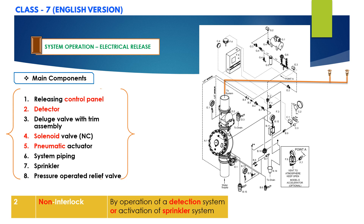When the deluge valve operates, the sensing end of the pressure-operated relief valve (PORV) is pressurized, causing the PORV to operate. The PORV continually vents the priming chamber to prevent the deluge valve from resetting, even if the open releasing devices close. The deluge valve can only be reset after the system has been taken out of service and the outlet chamber and associated trim piping are depressurized and drained.